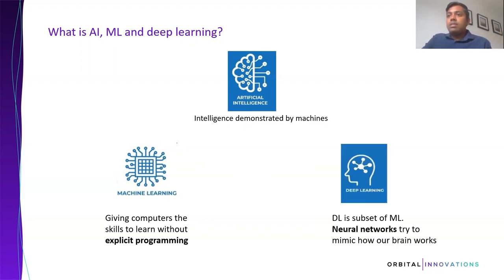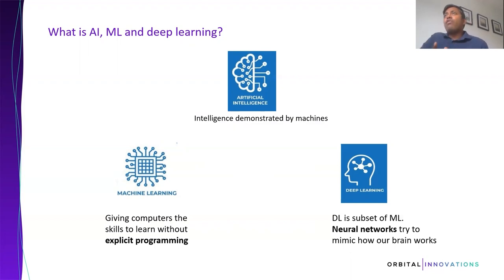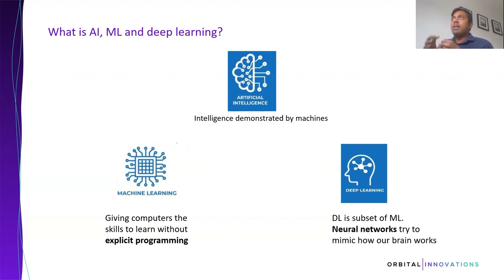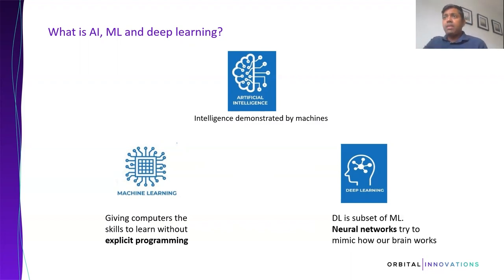Deep learning is a subset of machine learning — a set of algorithms that mimic the function of the brain. Our brain has lots of neurons and whenever something happens they fire and some action takes place. These algorithms in deep learning mimic that, and they are called neural networks. There are a great variety of such algorithms.